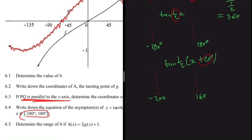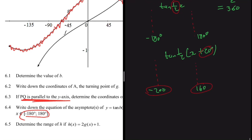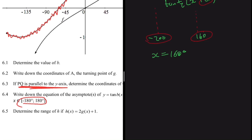The domain is x ∈ [-180°, 180°]. The asymptote at -200° falls outside this range, so it is excluded. The only asymptote within the given range is at x = 160°.